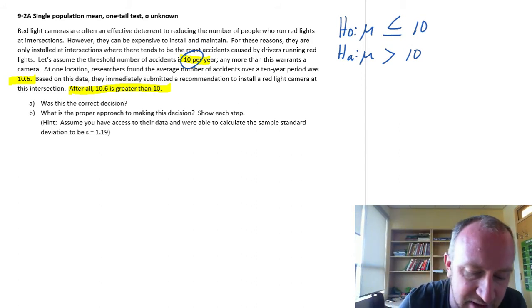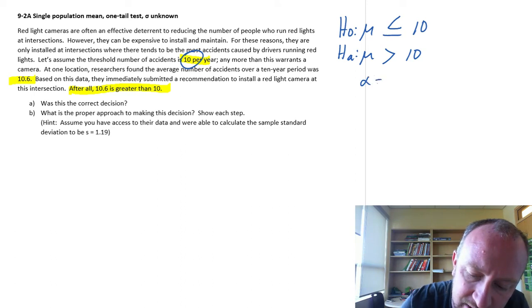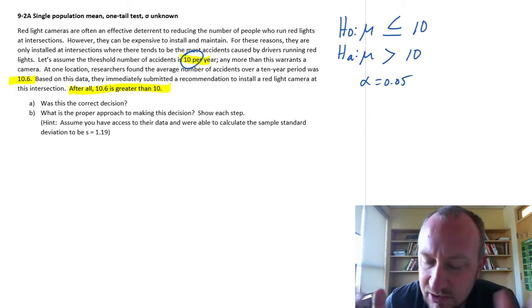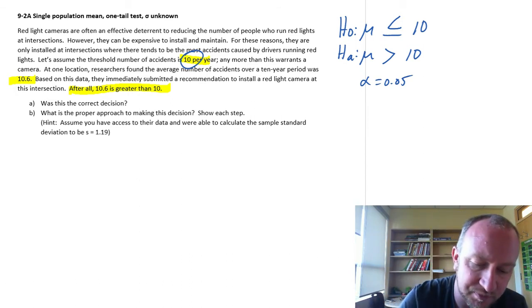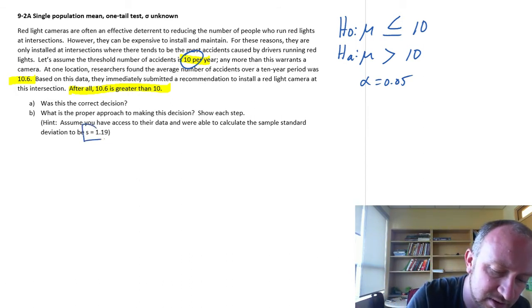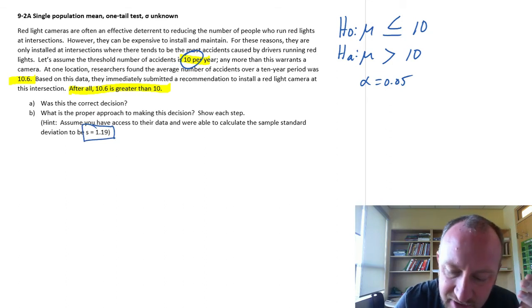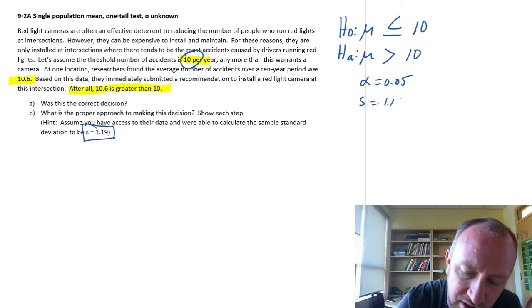We don't have a level of significance, so here we'll pick one. Let's see, just 0.05. Don't need to pick anything too different. And let's go ahead with the test. So here we have access to our data. So we have our sample standard deviation was 1.19, sample mean was 10.6.